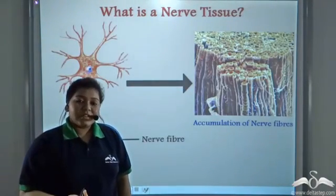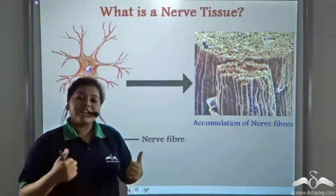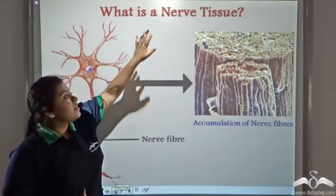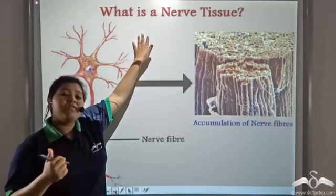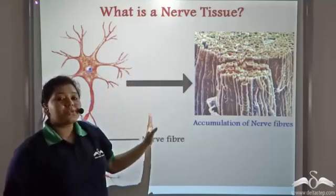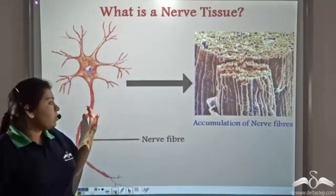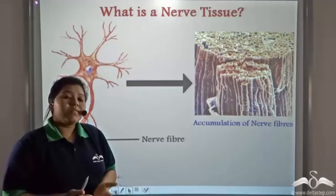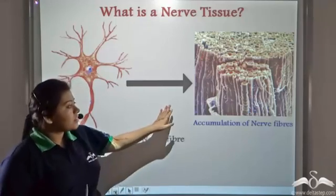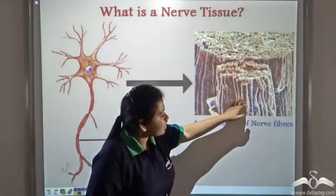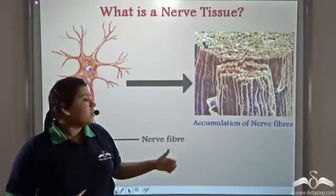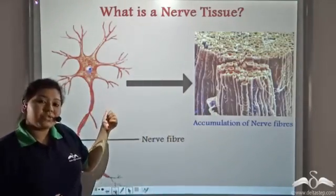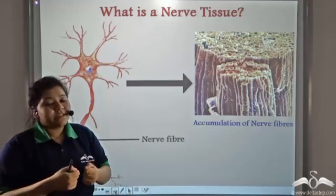So what is a tissue? Tissue is an accumulation of cells. So similarly nerve tissue is an accumulation of nerve cells or neurons. So neurons, a lot of neurons together form the nerve tissue. See, a lot of neurons together form the nerve tissue or the nerve fibers. The nerve cells or the neurons are also known as nerve fibers. They bunch together to form the nerve tissue in our body.